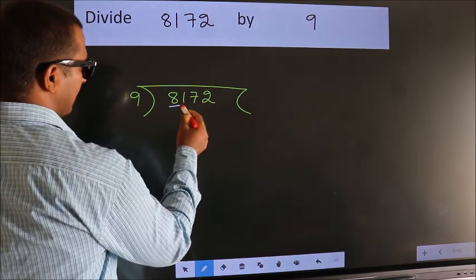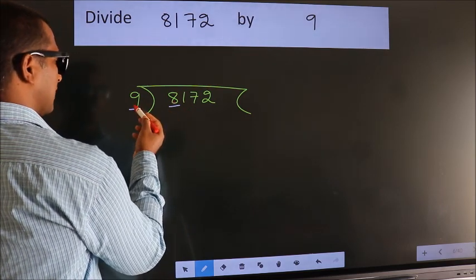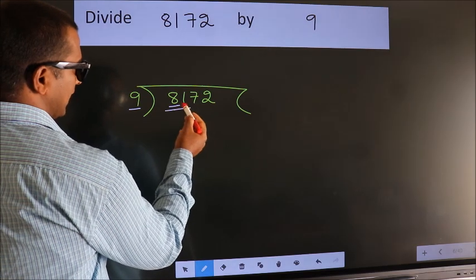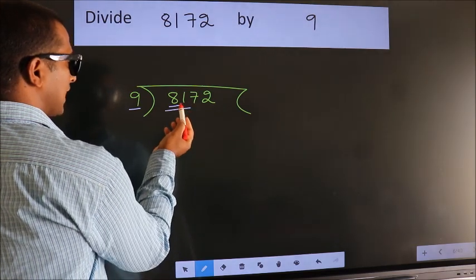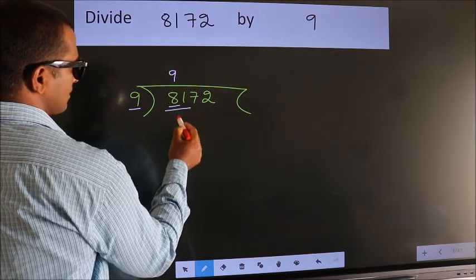Here we have 8, here 9. 8 is smaller than 9, so we should take two numbers: 81. When do we get 81 in the 9 table? 9 nines is 81.